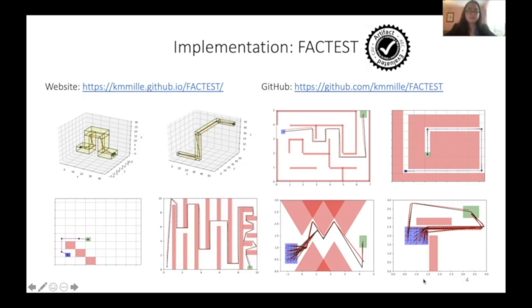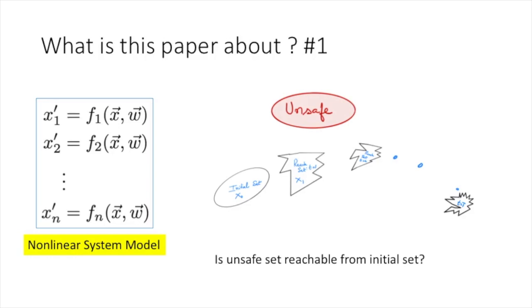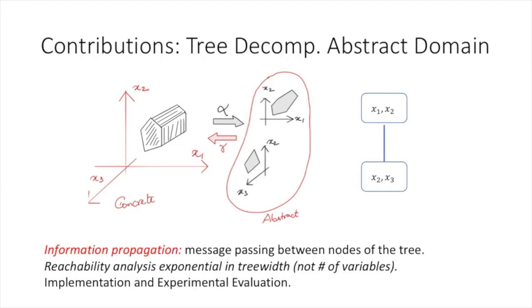This is a teaser for the CAV paper titled Reachability Analysis of Nonlinear Systems Using Message Passing Over Tree Decompositions. This paper talks about reachability analysis of nonlinear dynamical systems defined by a nonlinear model. The goal is, starting from an initial set of states, to prove that some unsafe set is not reachable within some time T. In this paper, we use a tree decomposition abstract domain, defining a way to take high-dimensional sets and project them onto different subsets of dimensions using something called a tree decomposition.